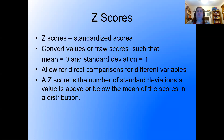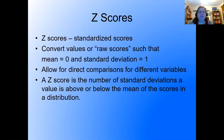Now that we understand standard deviation and how it works with normal curves, we can talk about z-scores. A z-score is a standardized score, meaning we convert values or raw scores such that the mean is zero and the standard deviation is one. This allows for direct comparisons between different variables that you otherwise couldn't compare. A z-score is simply the number of standard deviations you are above or below the mean.